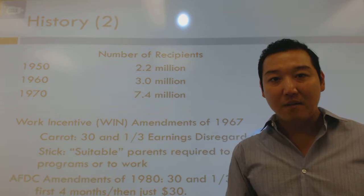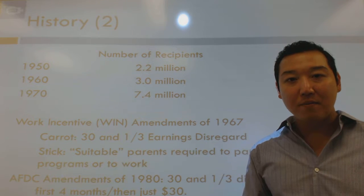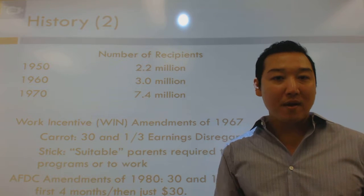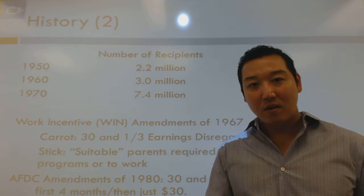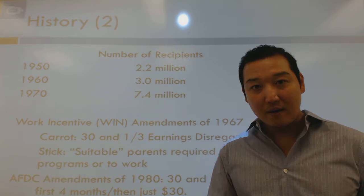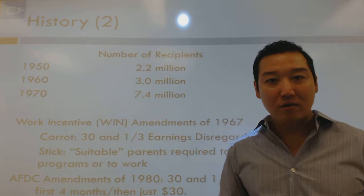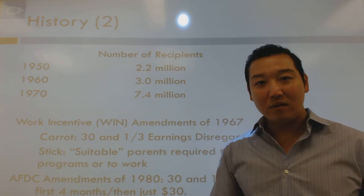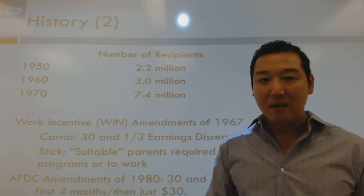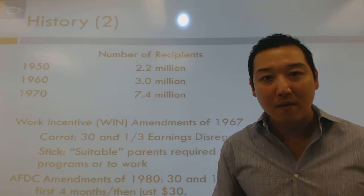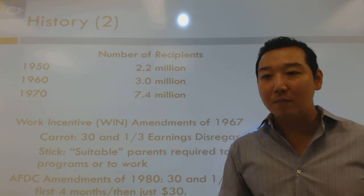Getting back to the theme of program growth: we thought ADC would simply go away by implementing the survivor's component of Social Security. But that didn't result in abolishing ADC. The numbers show 2.2 million recipients by 1950, 3 million by 1960, and over 7 million by 1970. The program just kept growing and growing.